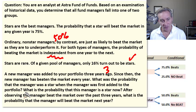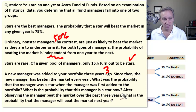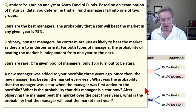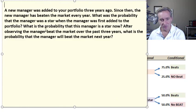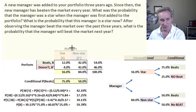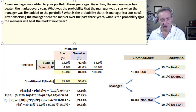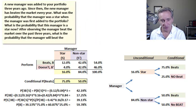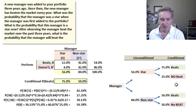Now we get to the Bayes question: what is the probability that the manager is a star now, after we have evidence of three years of performance? And the follow-up: after observing the manager beat the market over the past three years, what is the probability the manager will beat the market next year? To answer that, I've captured the assumptions on a spreadsheet showing both a probability matrix and a tree format.